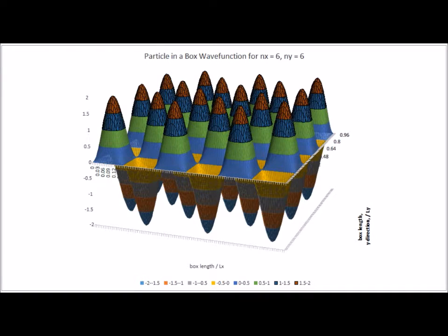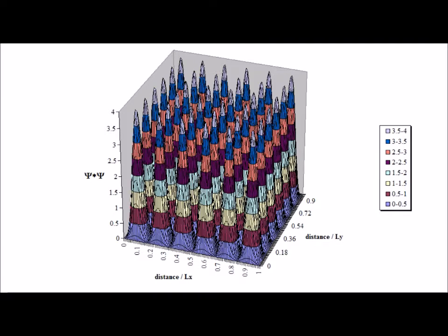The last wave function that we are going to examine is the case where n sub x equals 6 and n sub y equals 6. In each case, along the x and y coordinates, we have a total of five nodes. Here is a graph of the probability density function psi star psi for n sub x equals 6 and n sub y equals 6.